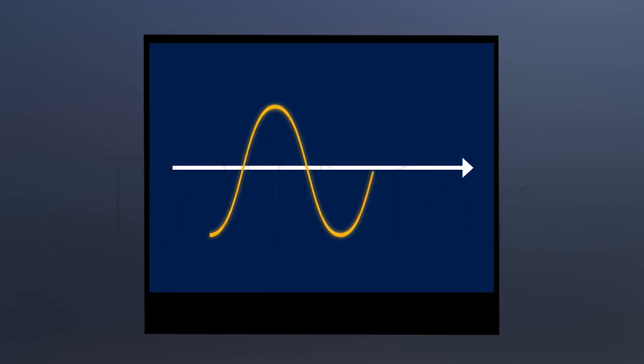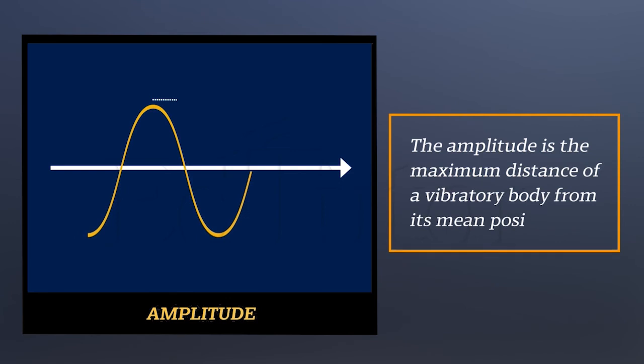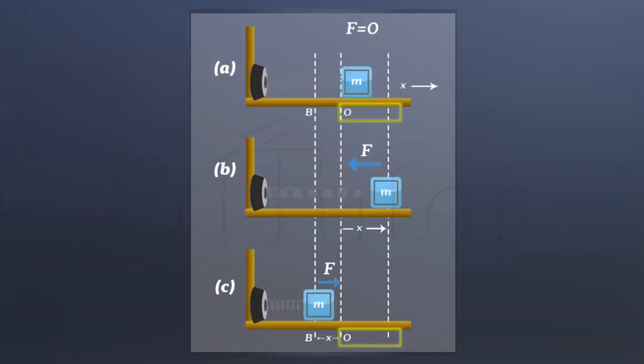Now, the next term that we need to know is amplitude. The amplitude is the maximum distance of a vibratory body from its mean position. In the case of this figure, the distance from O to A is the body's amplitude.